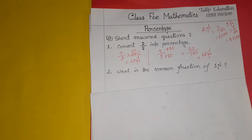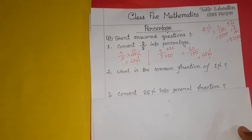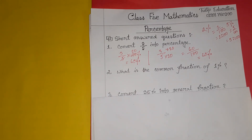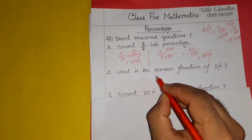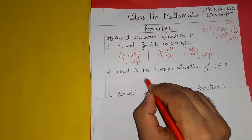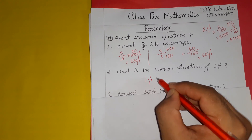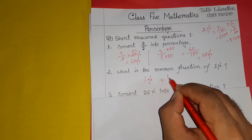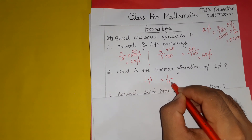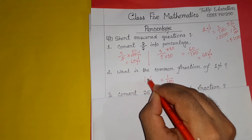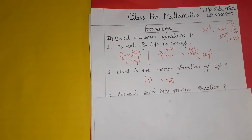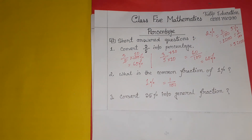Second question: what is the common fraction of 1%? The answer is that 1% means 1 divided by 100. That is our solution.